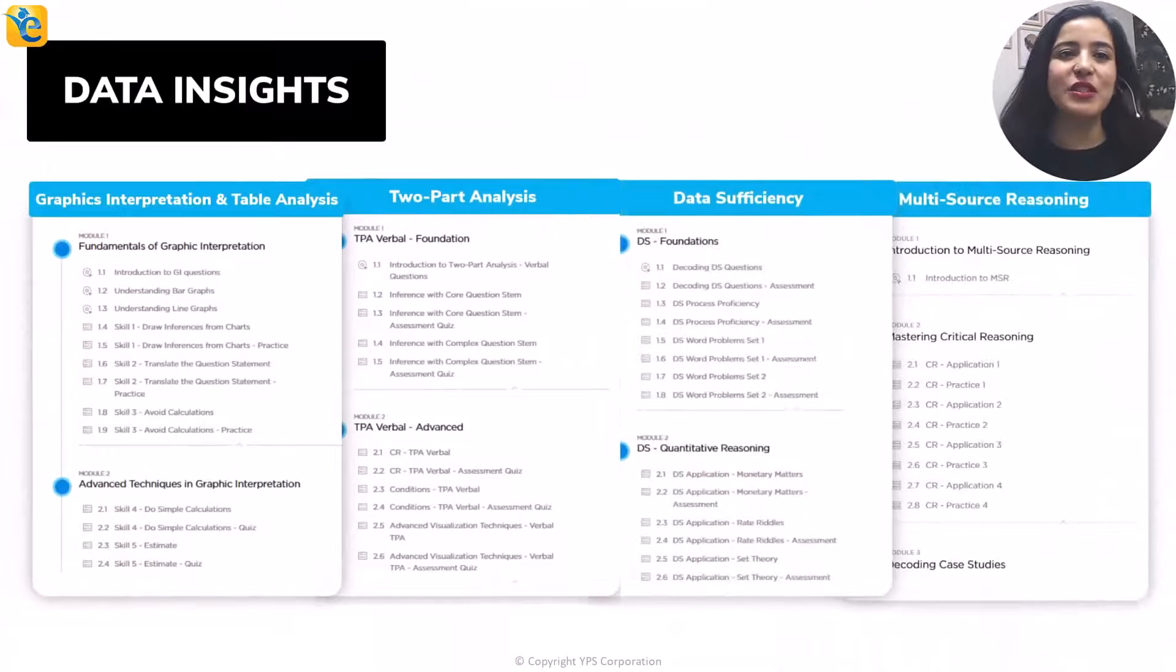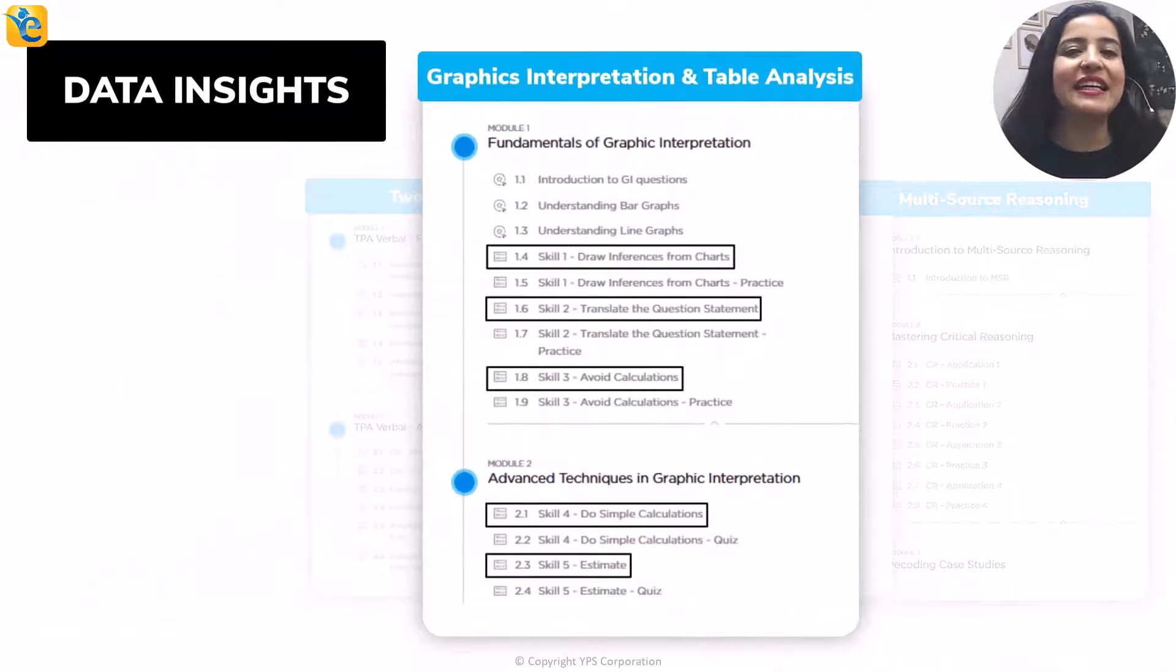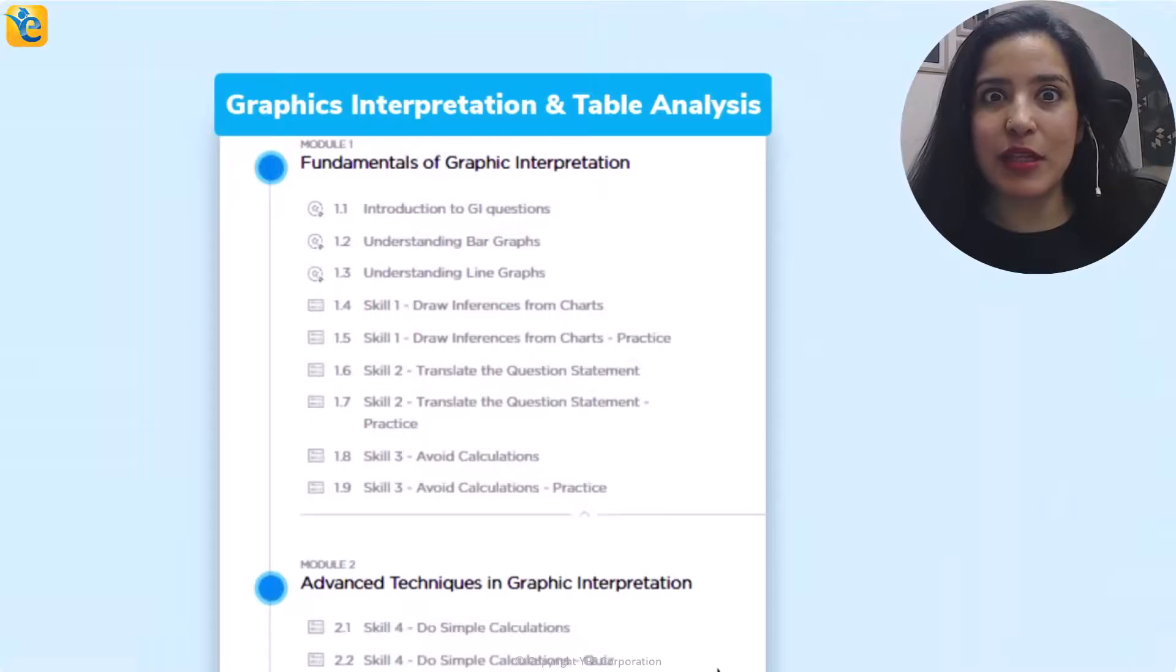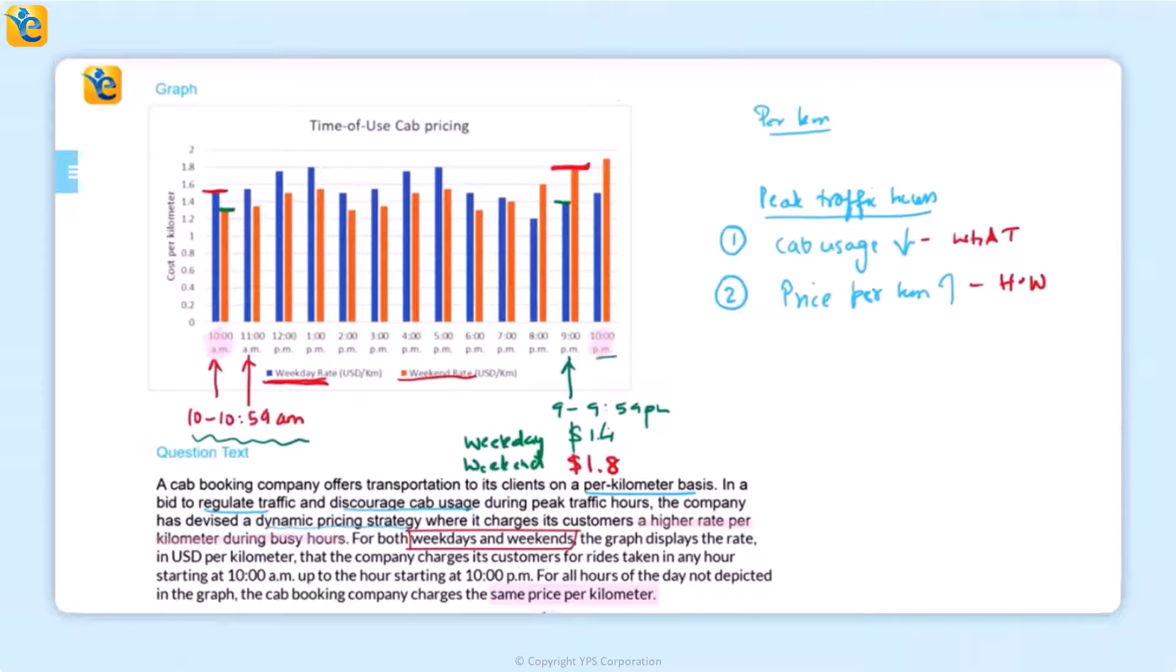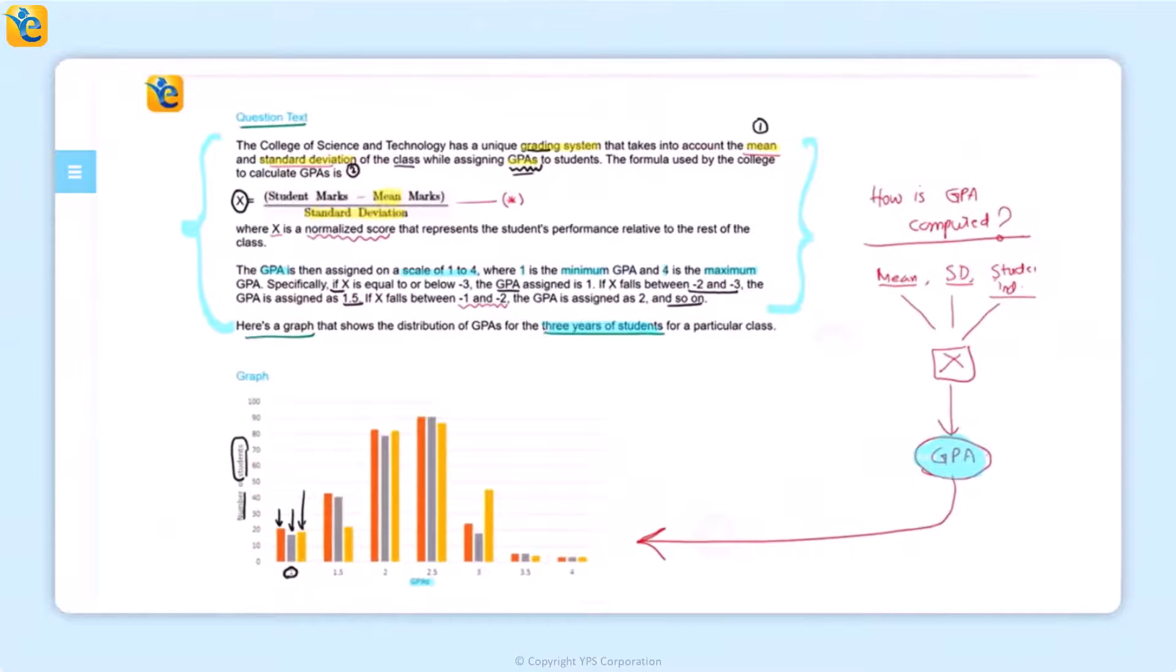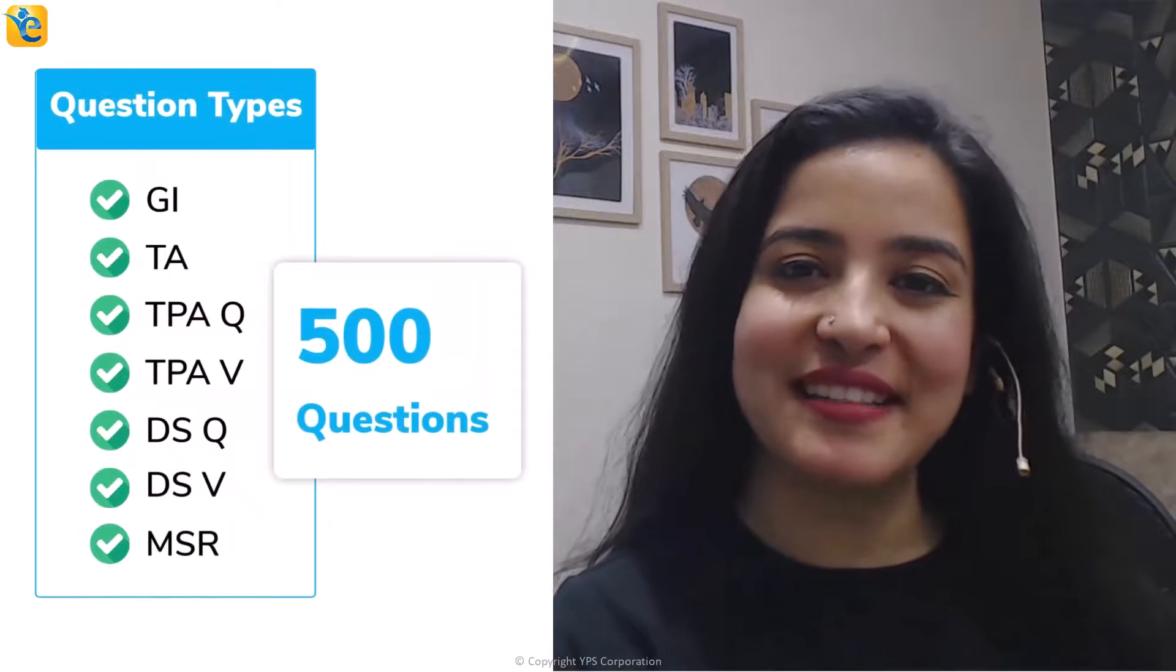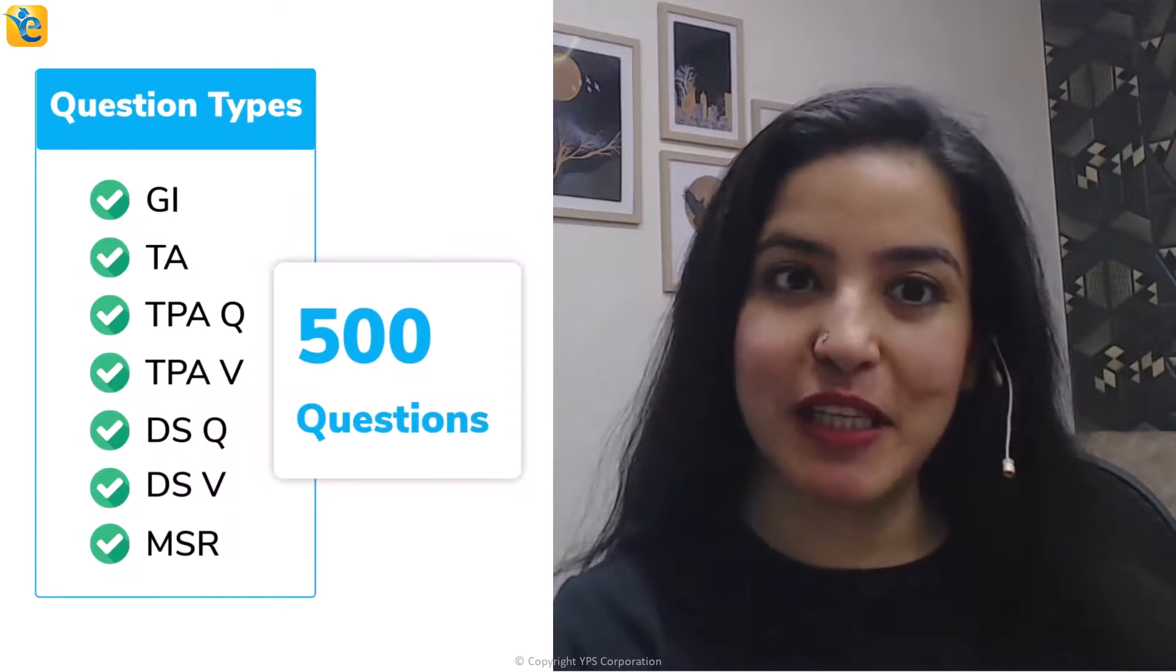At this point, let me ask you this. Could you have arrived at the approach of solving this question with this level of clarity had you not spent the effort in thoroughly understanding the information presented? Such is the power of the process of owning the data set. Because this skill may not come naturally to many of you, we have created a course architecture that ensures that we teach you this skill through every guided quiz in the EGMAT DI course and we reinforce the same in every practice quiz. In fact, the way we applied translate process skills so comfortably in this question, in the EGMAT course, you will learn how to build this translate process skill through purpose-built exercises. Thus, throughout the DI course, through around 500 questions, you will learn such process skills so that you can also comfortably use the owning the data set approach. Let's now get back to the solution at hand.